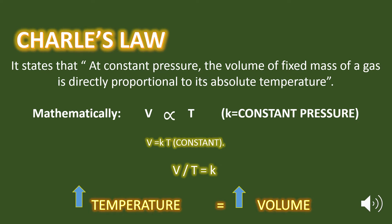So we can write this equation as V is equal to K times T, where V is the volume of a gas, T is the temperature, and K is the constant. Or we can also write this equation as V by T is equal to K, a constant.